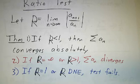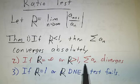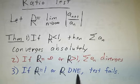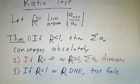A couple of things about the limit not existing. If the limit doesn't exist because things get bigger and bigger — that is, if the limit is infinity — that counts as bigger than one. But if the limit doesn't exist because it keeps oscillating, in that case we throw up our hands and say we don't know what to do. The test doesn't work.